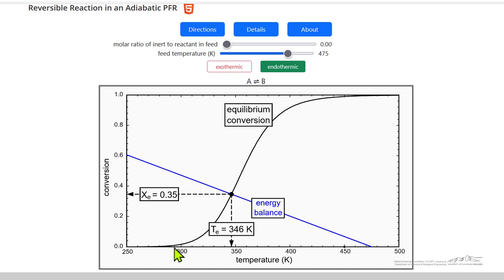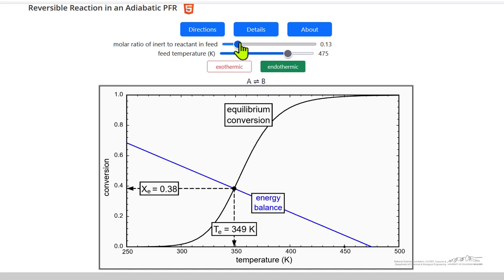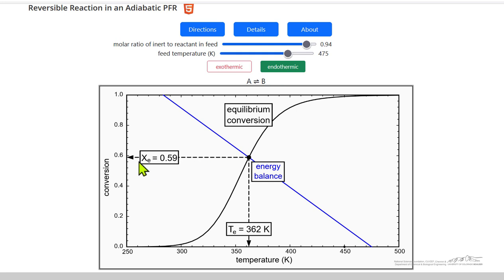For endothermic reactions, as we raise the temperature, the equilibrium conversion increases. That's the black line. And so you can see equilibrium conversion and equilibrium temperature. So we fed at 475 and the temperature drops because of cooling from reaction. It's an adiabatic reactor.